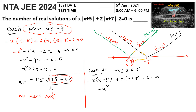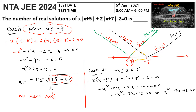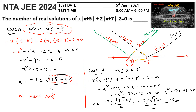We write the equation as negative x squared minus 5x plus 2x plus 14 minus 2 equals 0, giving minus x squared minus 3x plus 12 equals 0. Solving this gives two real roots.